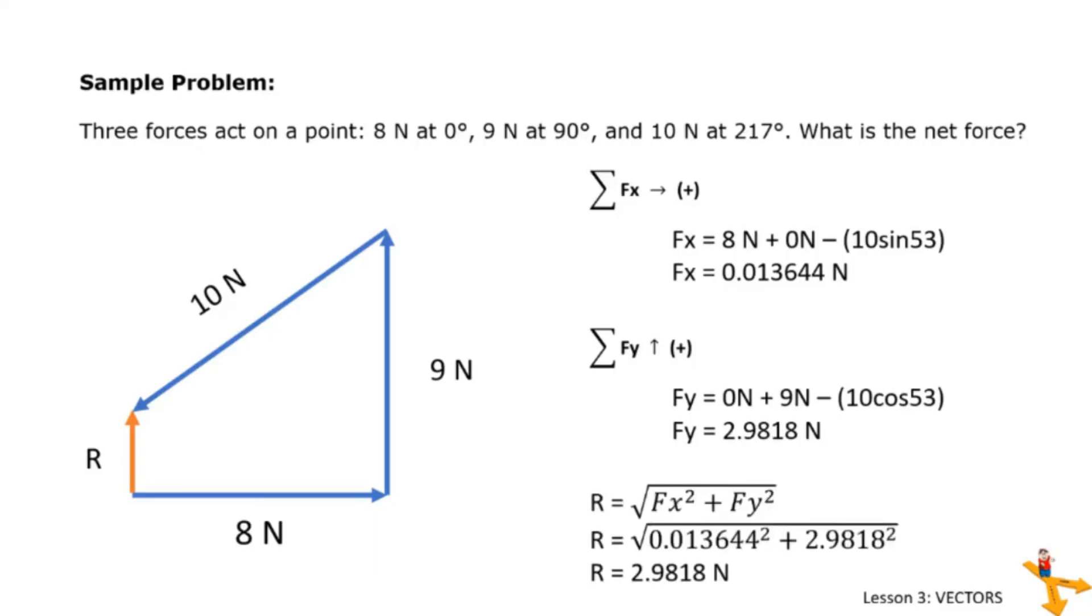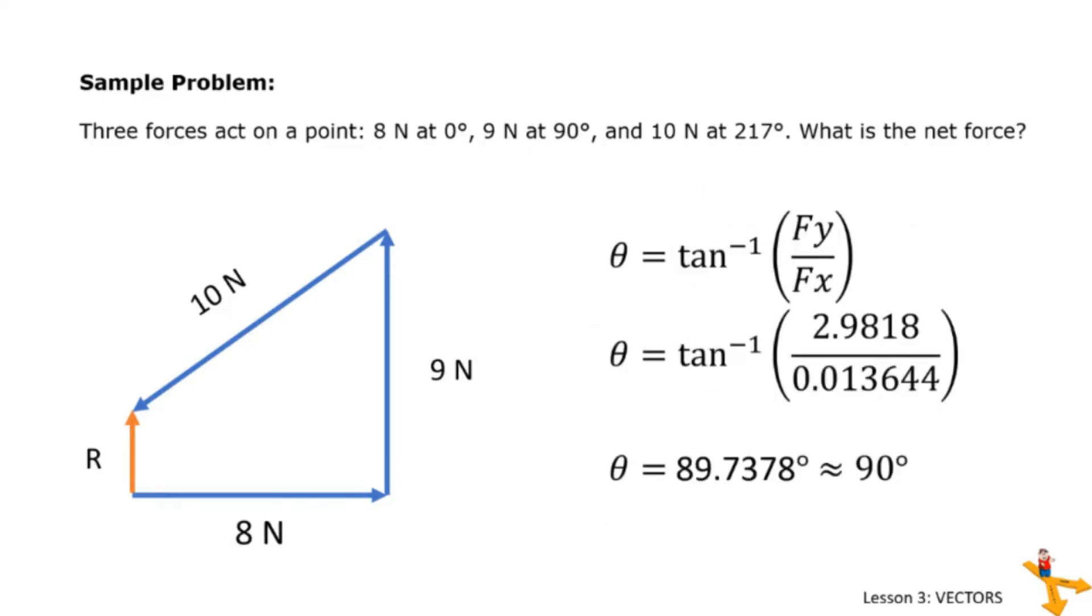Now to get the resultant, we simply compute for the square root of the square of the summation of Fx and Fy. Our resultant R equals 2.9818 newtons. To determine whether our resultant's direction is right, let us compute for theta, arctan multiplied by Fy over Fx, we get 89.7378 degrees.